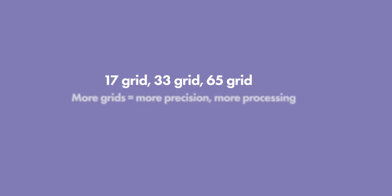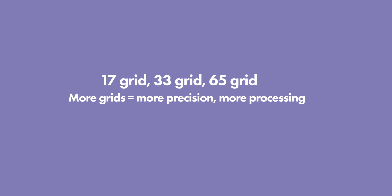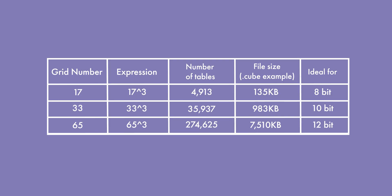Within the 3D LUT folder, you'll see three additional folders labeled 17-grid, 33-grid, and 65-grid. Basically, the more grids you have, the more complex the 3D cube is that transforms your footage. 65-grid options are the most precise, but also require more processing power. I found that 33-grid LUTs are a nice sweet spot, but that's just personal preference.